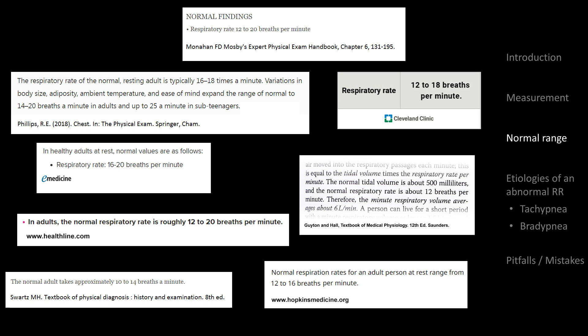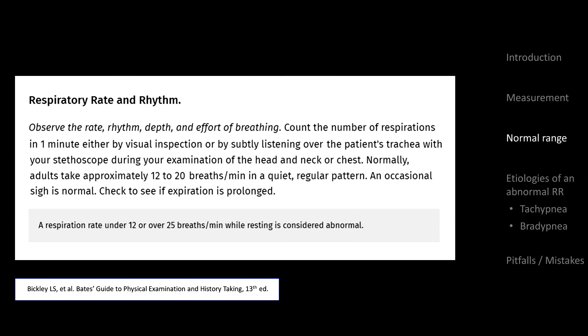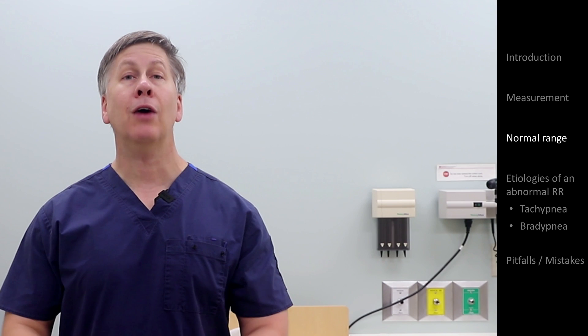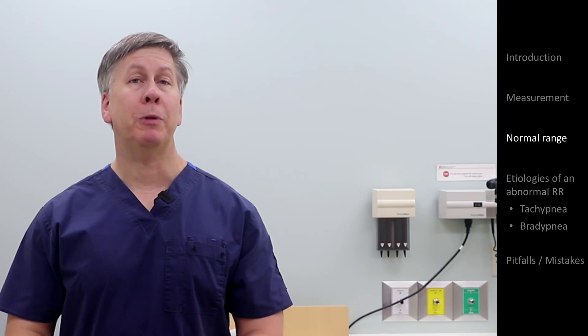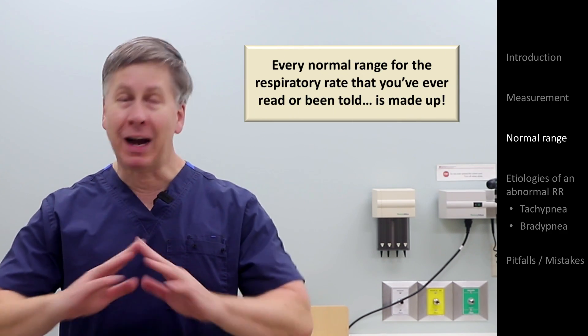Sometimes a reference doesn't even agree with itself. For example, the 13th edition of Bates's Guide to Physical Examination and History Taking offers these seemingly contradictory statements back to back: 'Normally adults take approximately 12 to 20 breaths per minute in a quiet, regular pattern.' And: 'A respiratory rate under 12 or over 25 breaths per minute while resting is considered abnormal.' So, is a rate of 22 normal or not normal? How can all these people and all these sources be quoting ranges that are different? Well, it's because they are made up.